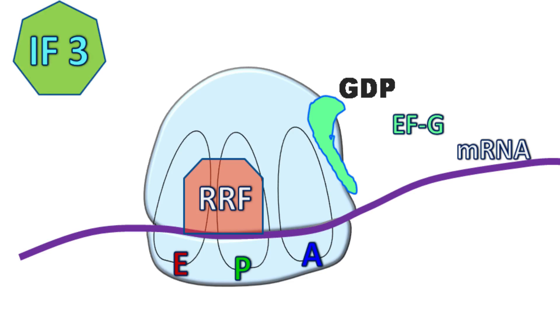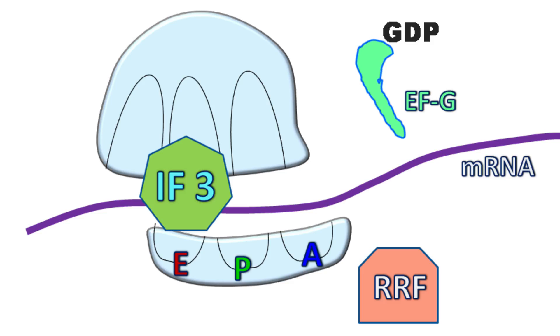And when finally IF3 binds to the 30S subunit, the translational machinery gets disassociated.